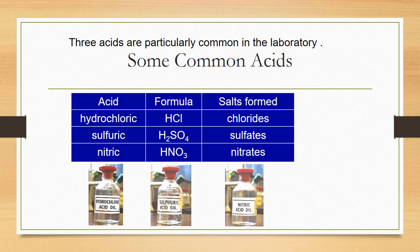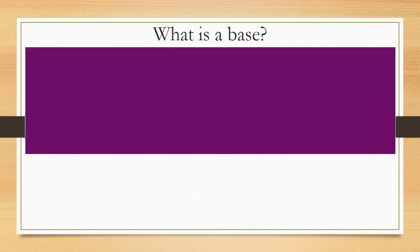These are some common laboratory acids: hydrochloric, sulfuric, and nitric acids, along with their chemical formulas and the salts they form. Hydrochloric acid reacts with a base to give chlorides, sulfuric acid gives sulfates, and nitric acid gives nitrates.